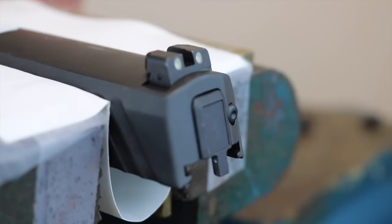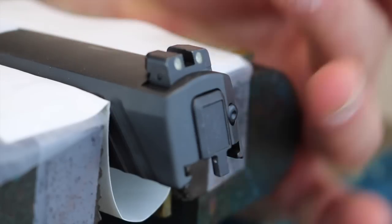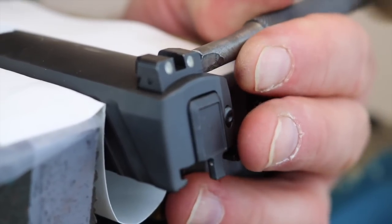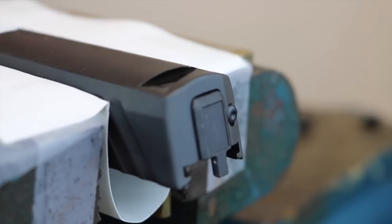We've got the slide switched in the vise so that we can hang on to it and remove the factory rear. Same thing, take a hammer and a punch and drive the factory sight off.